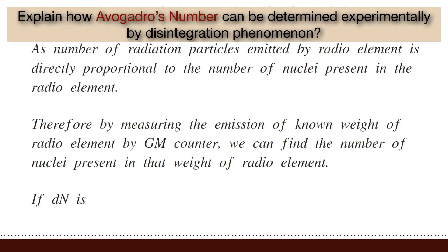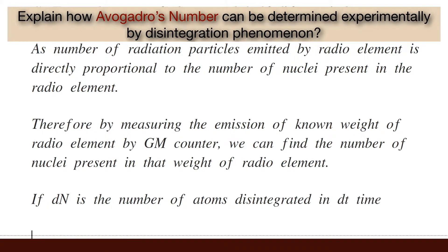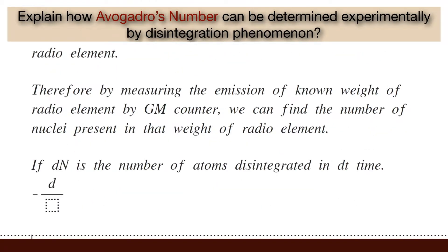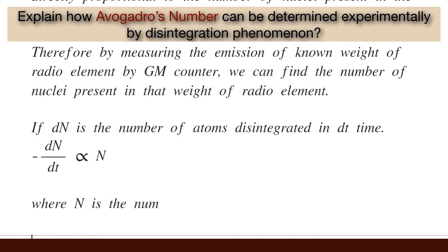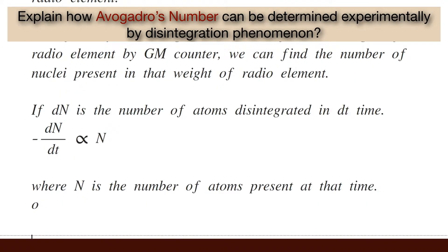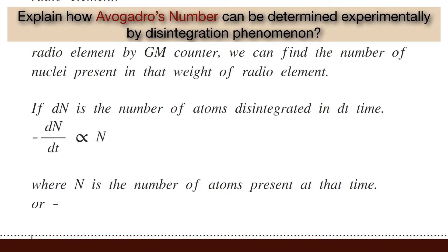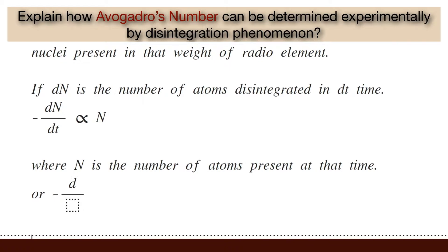If dn is the number of atoms disintegrated in time dt, then −dn/dt is proportional to n, where n is the number of atoms present at that time. Or, −dn/dt = nλ, where λ is the decay constant.